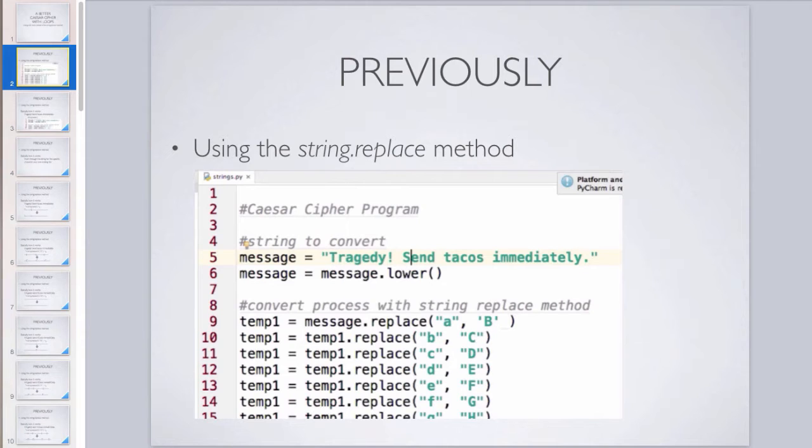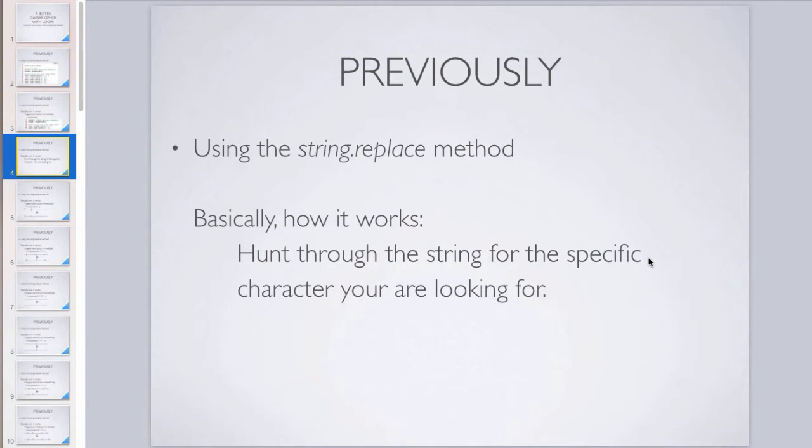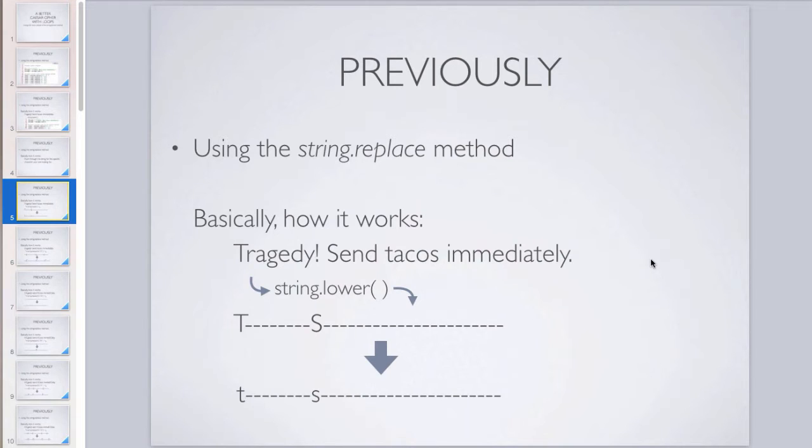So in the previous version, we used the string replace method, which is what we also used when we did Morse code. In fact, we just took the Morse code program and converted it for a Caesar Cipher. Basically, the way it worked is we had the string, which you can see here, and we ran the string.lower method, which you can see right there. So the name of the variable, .lower. After that, we had all the string replace methods that hunt through the string line by line, looking for that very specific character.